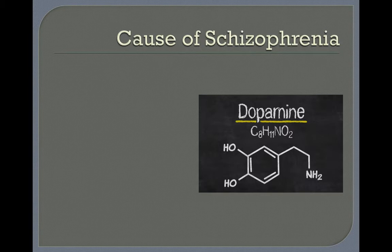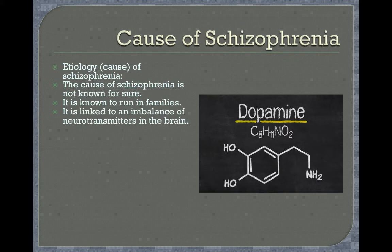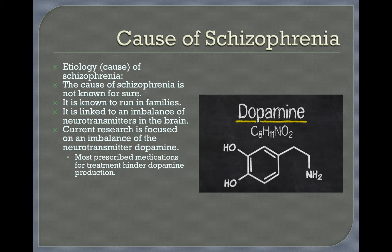It is now known that schizophrenia is caused by biological issues in the brain. The definite cause, or etiology, isn't known for sure, but it is known that it involves brain chemistry and runs in families. There is a genetic component, and it is linked to an imbalance in neurotransmitters — the chemicals in the brain that carry messages to other parts. Current research is focused on an imbalance of the neurotransmitter dopamine, and most prescribed medications for the treatment of schizophrenia hinder dopamine production, as too much dopamine in the system appears to be involved.